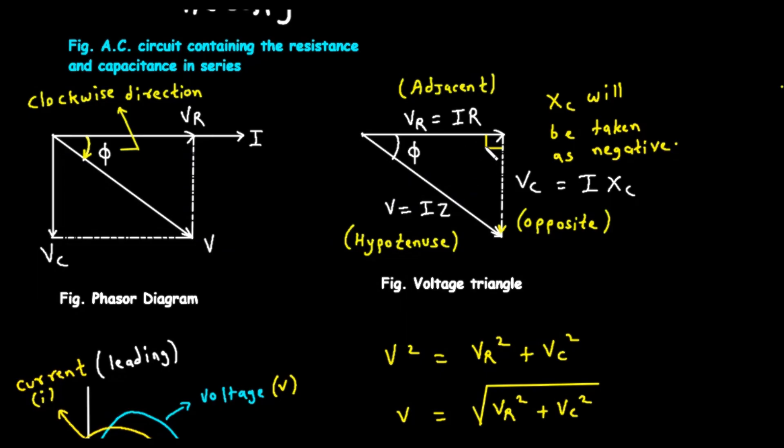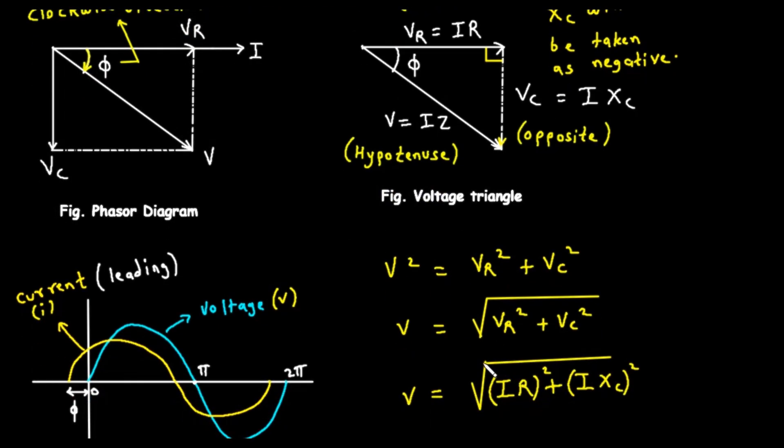In this triangle, the horizontal side is VR, which we can call the adjacent side. The vertical side is VC, the opposite side. And the diagonal, the longest side, is the total voltage V, which is the hypotenuse. Now we can use basic geometry, the Pythagorean theorem, to find the magnitude of the total voltage V. The theorem states that the square of the hypotenuse is equal to the sum of the squares of the other two sides. So V squared equals VR squared plus VC squared. To find V, we take the square root of both sides. So V equals the square root of the quantity VR squared plus VC squared.